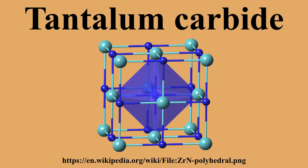Tantalum carbides have metallic electrical conductivity, both in terms of its magnitude and temperature dependence. TaC is a superconductor with a relatively high transition temperature of Tc equals 10.35 K. The magnetic properties of TaCx change from diamagnetic for X less than 0.9 to paramagnetic at larger X. An inverse behavior is observed for HfCx, despite it having the same crystal structure as TaCx.